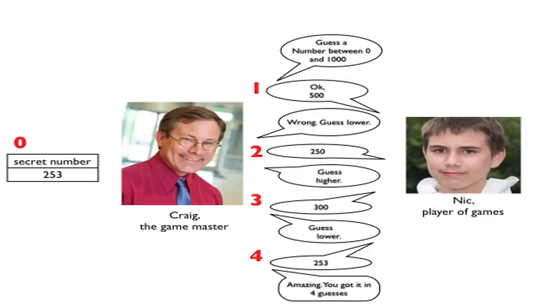In each round, Craig started by asking Nick to guess a number within the range. Nick's first guess was 500. After each guess, Craig evaluated the guess to determine if it was higher or lower than the secret number and then responded, telling Nicholas that it was wrong and which way to guess next time. Nick came back with another guess in the direction that Craig had mentioned.